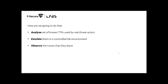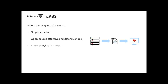How are we going to do this? We're going to analyze known TTPs — tactics, techniques and procedures — used by real threat actors. We're going to emulate some of those in a controlled lab environment, then observe the traces they leave and the opportunities we have to detect them, framing some of this with MITRE ATT&CK where we can. Before we jump into the action, just a brief overview: it's a very simple lab setup intentionally, with a couple of virtual machines — one is the attacker and one is the target machine.